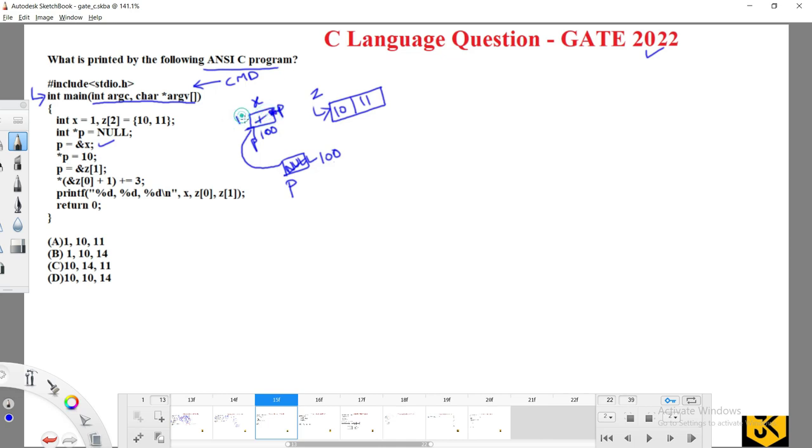p = &z[1] means p equals address of z[1]. If you observe, this array address is 200 and this is 204 as it is integer. They are trying to copy the address of z[1], which is 202, into this p pointer. So here you are going to get 202. As soon as you got 202, now you are connected to this location.